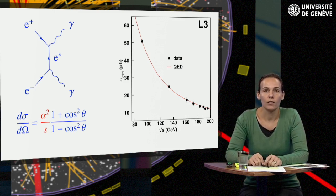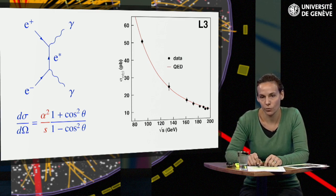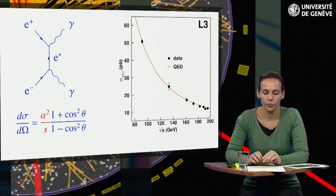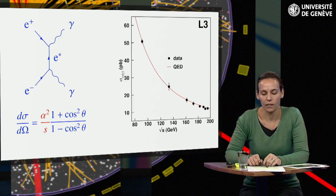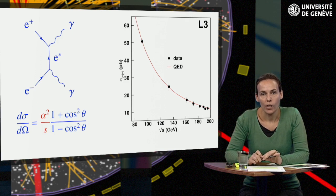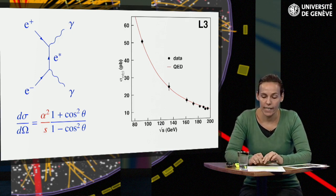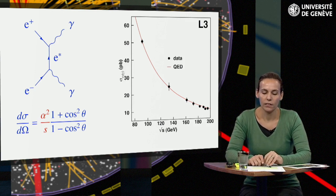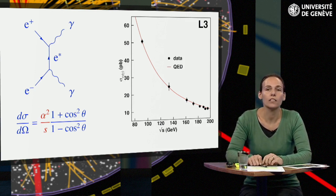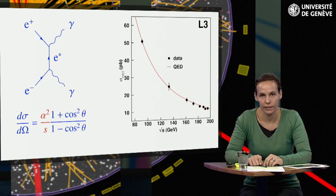Already the factor 1 over s looks suspicious, but the dangerous limit s goes to 0 cannot be reached, because of the threshold s larger than 4 times the square of the mass of the electron. The angular divergence, on the other hand, is real. It is finally not realized because of higher-order corrections which cancel it.